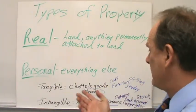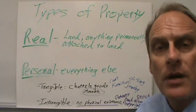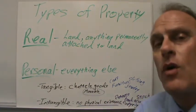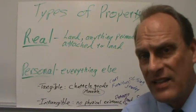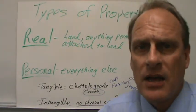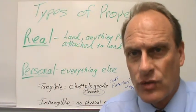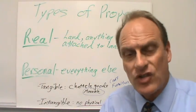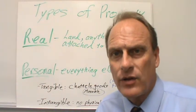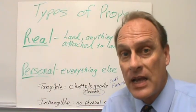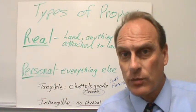And then the other subgroup of properties is intangible personal property. There's no physical presence or existence to intangible personal property. That's going to be things like copyrights, patents, bank accounts, or stocks. You can touch the stock certificate or hold the checkbook, but that is not where the real value in those types of properties resides. The real value is something that cannot be touched, and so that's why we call it intangible personal property.